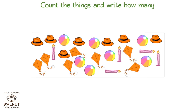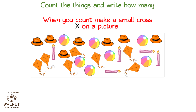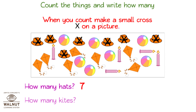Count the things and write how many. When you count, make a small cross on a picture. How many hats? One, two, three, four, five, six, seven. We have seven hats. How many kites? One, two, three, four, five, six, seven. We have seven kites.